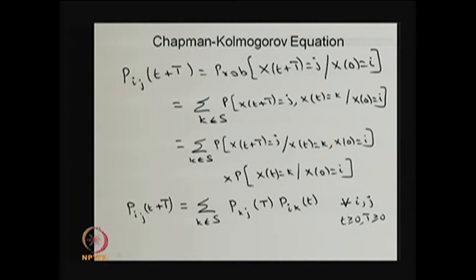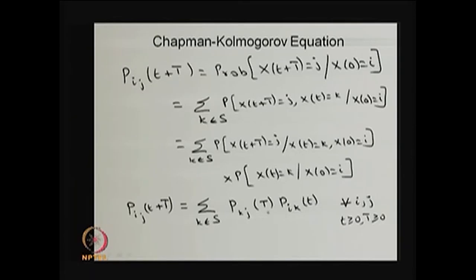By the Markov property, this equals the probability that the system was in state k at time t and moves into state j at time t plus T. Using the time-homogeneous property, the transition probability from t to t plus T depends only on the length T, so it equals p_kj(T). The second factor is the transition probability of the system moving from state i to k during 0 to t, which is p_ik(t).